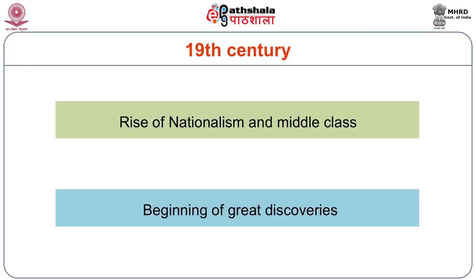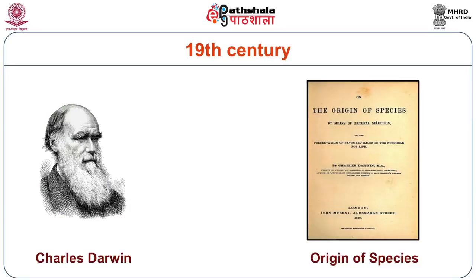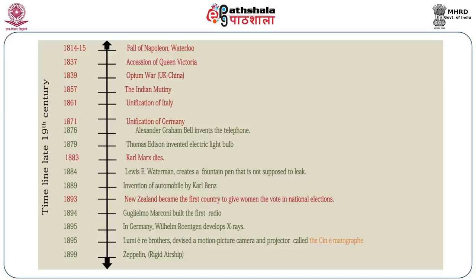This was also a time when discoveries were made. The biggest discovery had to do with the classic book called The Origin of Species. There were many historical events one would need to go through to understand the 20th century better. It could be the fall of Napoleon at Waterloo, the Opium War, the first Indian War of Independence of 1857, the invention of the electric bulb, or the death of Karl Marx.